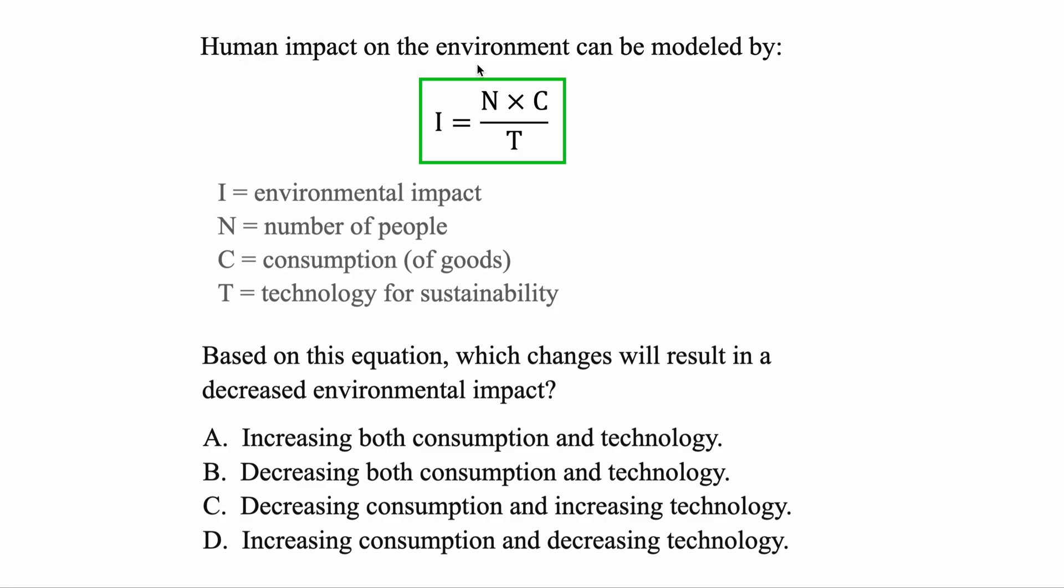Human impact on the environment can be modeled by this equation, and then they tell us what all the letters stand for. Based on this equation, which changes will result in a decreased environmental impact? Let's highlight that. This is the thing we're trying to find. How can this happen?